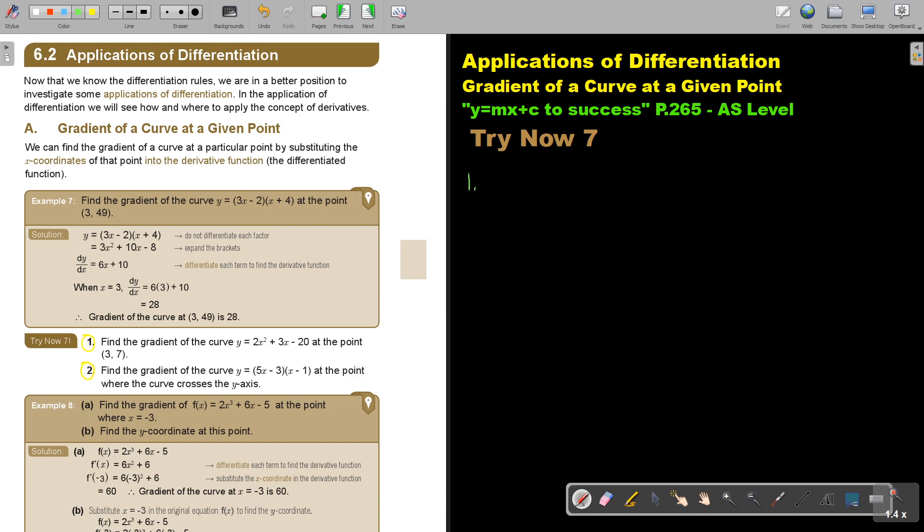Number 1. Find the gradient of the curve. Now let's first write down the function. This is a nice one, very easy, just to test if you can do the method. So first I am going to differentiate. dy by dx. And that will be 4x plus 3, and that will become 0.